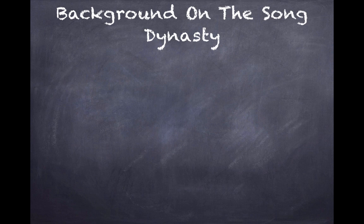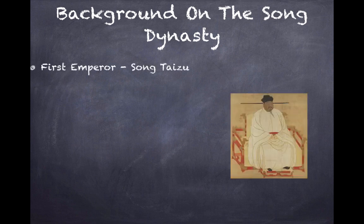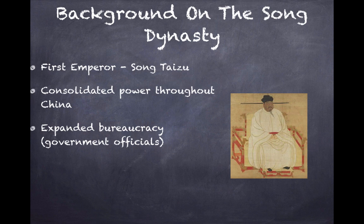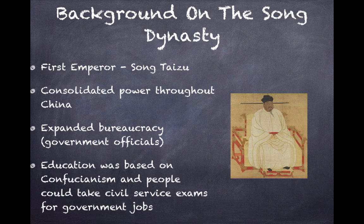Let's start off with some background on the Song Dynasty. The first emperor was Song Taizou, pictured here. He consolidated and grew his power throughout China, and he expanded bureaucracy — which means government officials. Please know that definition; it's very important. You will often see the term bureaucracy rather than government officials. Education was based on Confucianism, and people could take civil service exams for government jobs, so government and Confucianism were heavily linked.